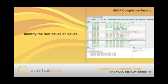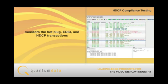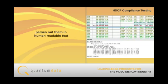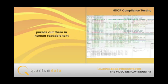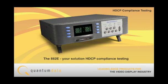The ACA enables you to identify the root cause of issues that could cause compliance test failures or interoperability problems. The ACA monitors hot plug events, as well as EDID and HDCP transactions, between the 882E and an HDMI HDCP device under test connected to it. The ACA logs each transaction and parses them out into human readable text. The 882E — your solution for HDCP compliance testing.